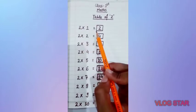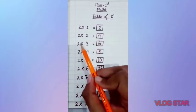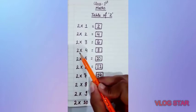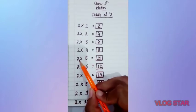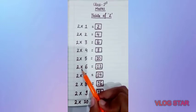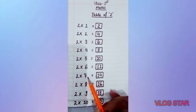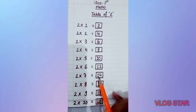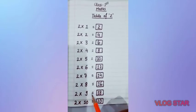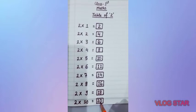So we will do again: 2 one ja 2, 2 two ja 4, 2 three ja 6, 2 four ja 8, 2 five ja 10, 2 six ja 12, 2 seven ja 14, 2 eight ja 16, 2 nine ja 18, 2 ten ja 20.